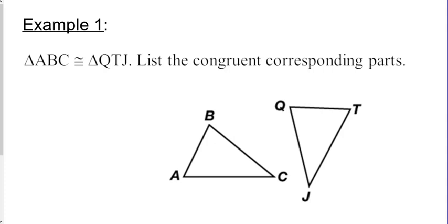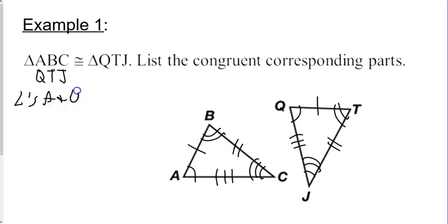Triangle ABC congruent to QTJ. I'm just going to write QTJ right underneath it. List the congruent parts. So, I'm just going to mark them first. A and Q, B and T, and then C and J. Now, I'm going to mark sides. AB and QT, BC and TJ, and then just leave this one easy enough. So, that would be angles A and Q, B and T, C and J. And line segment AB and QT, BC and TJ, and then AC and QJ. That simple.